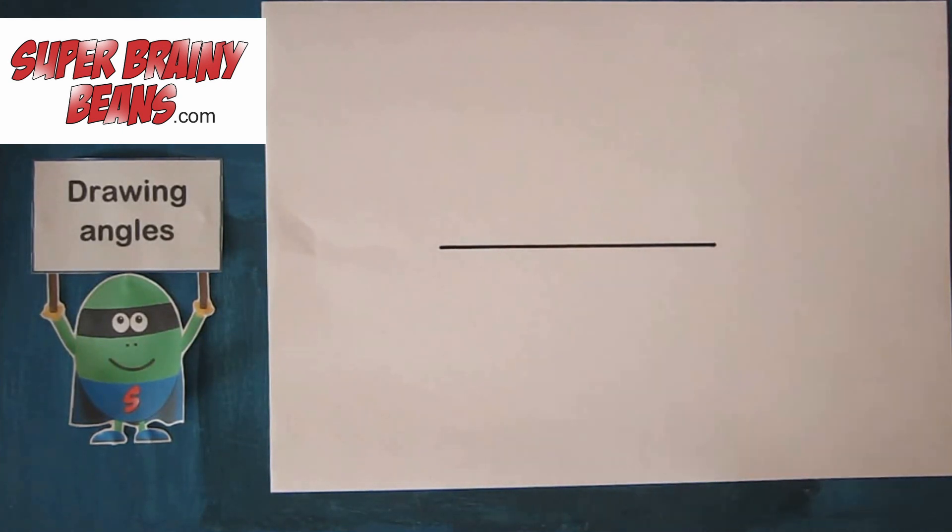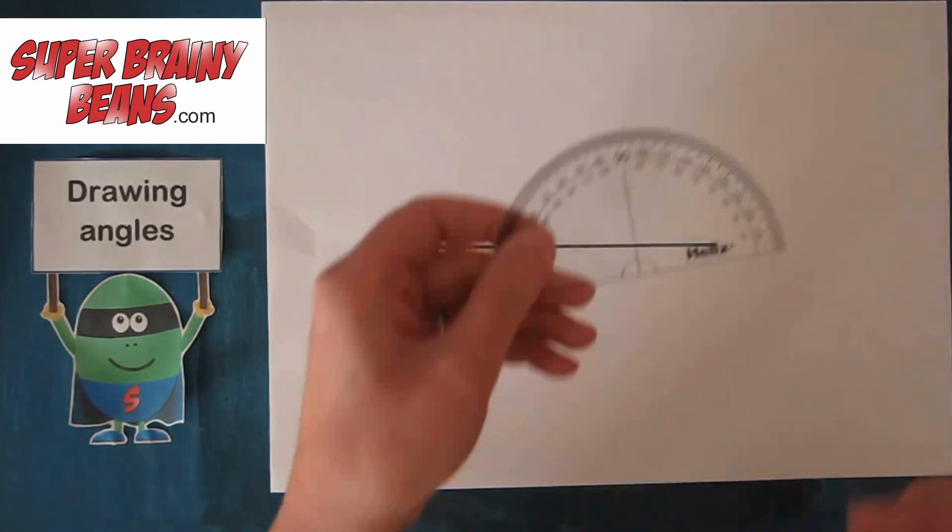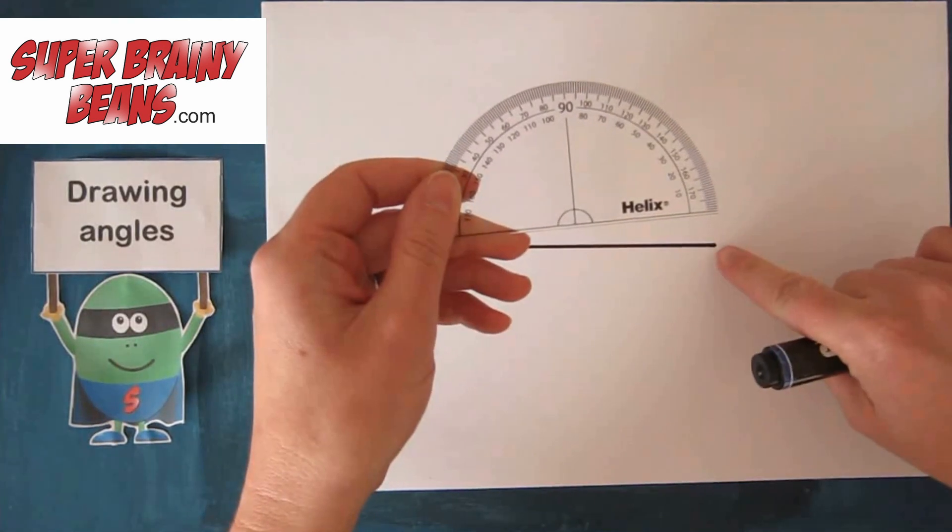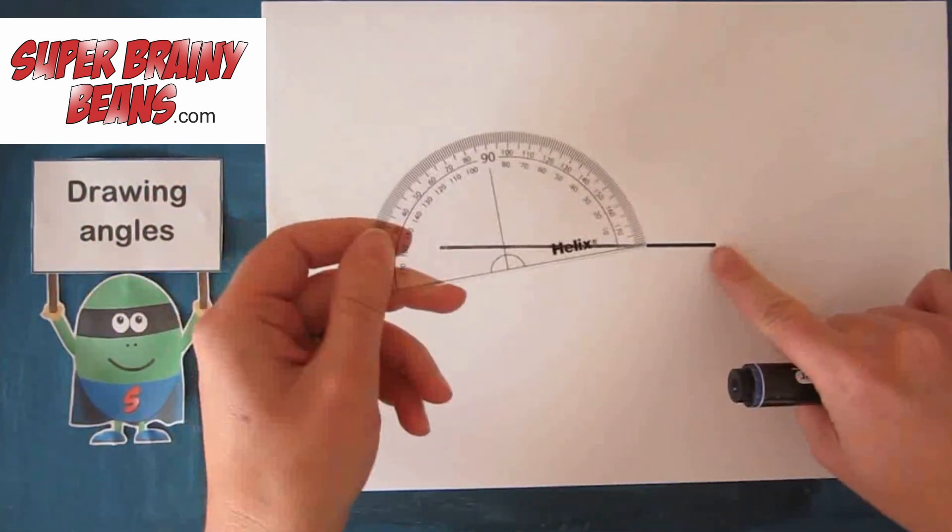Then we use our protractor. Now we're going to take one point of the line, I'm going to take this point.